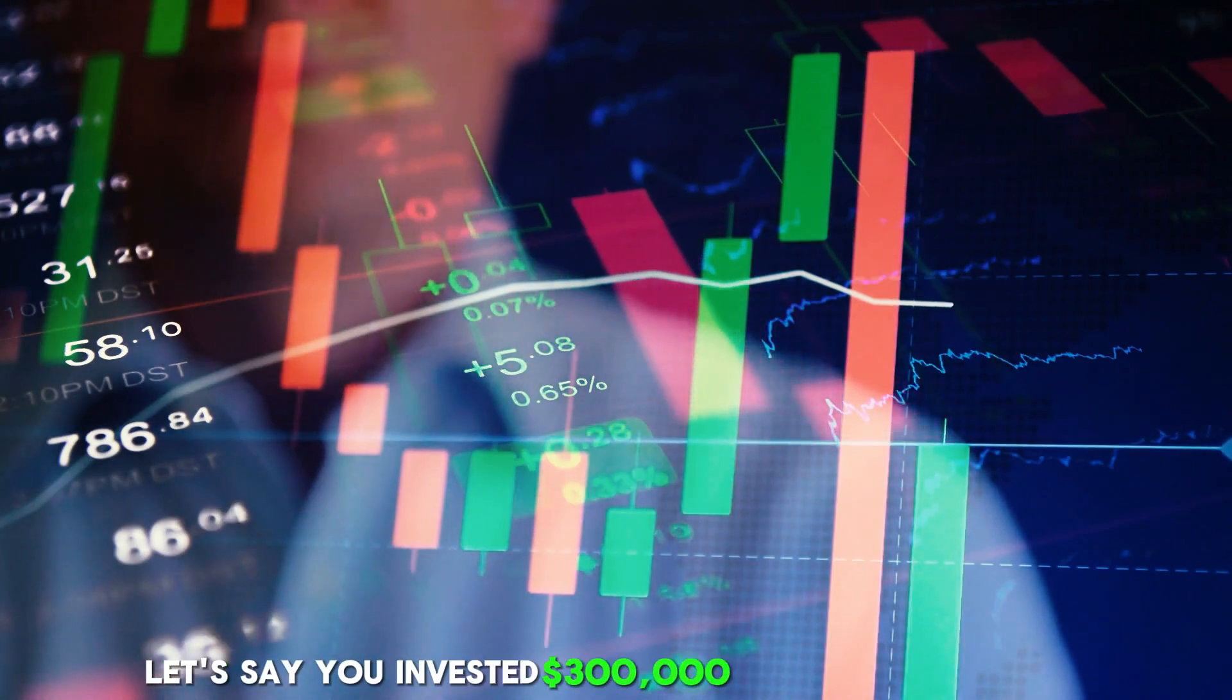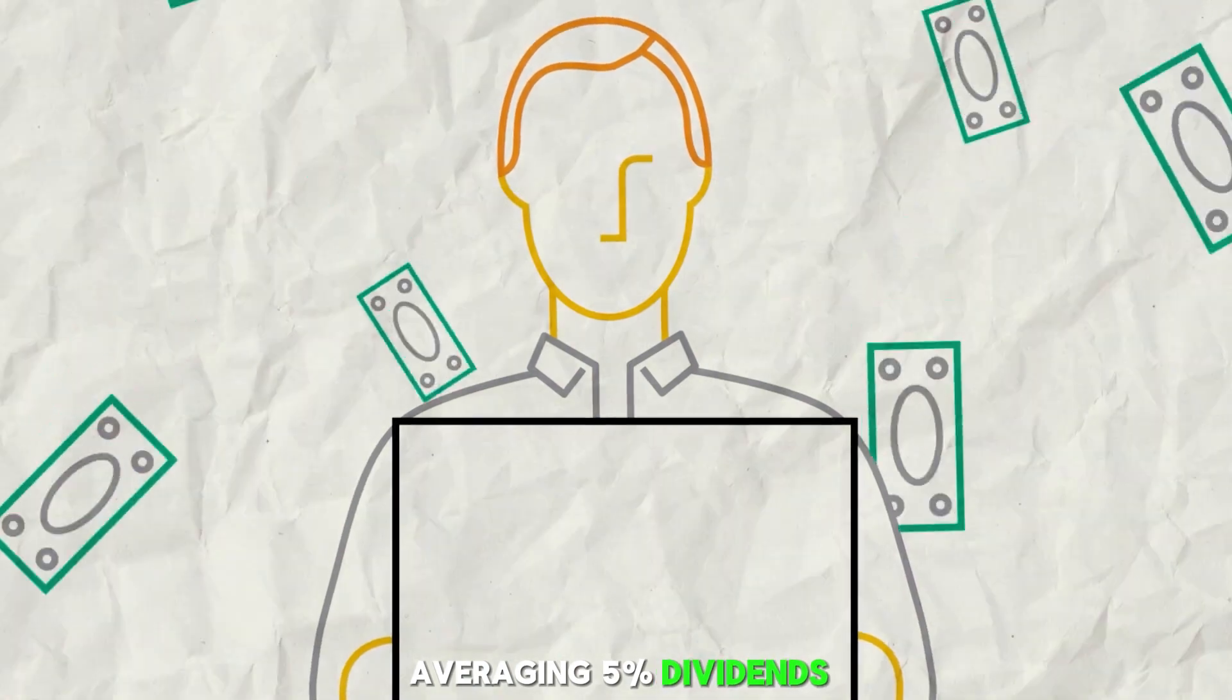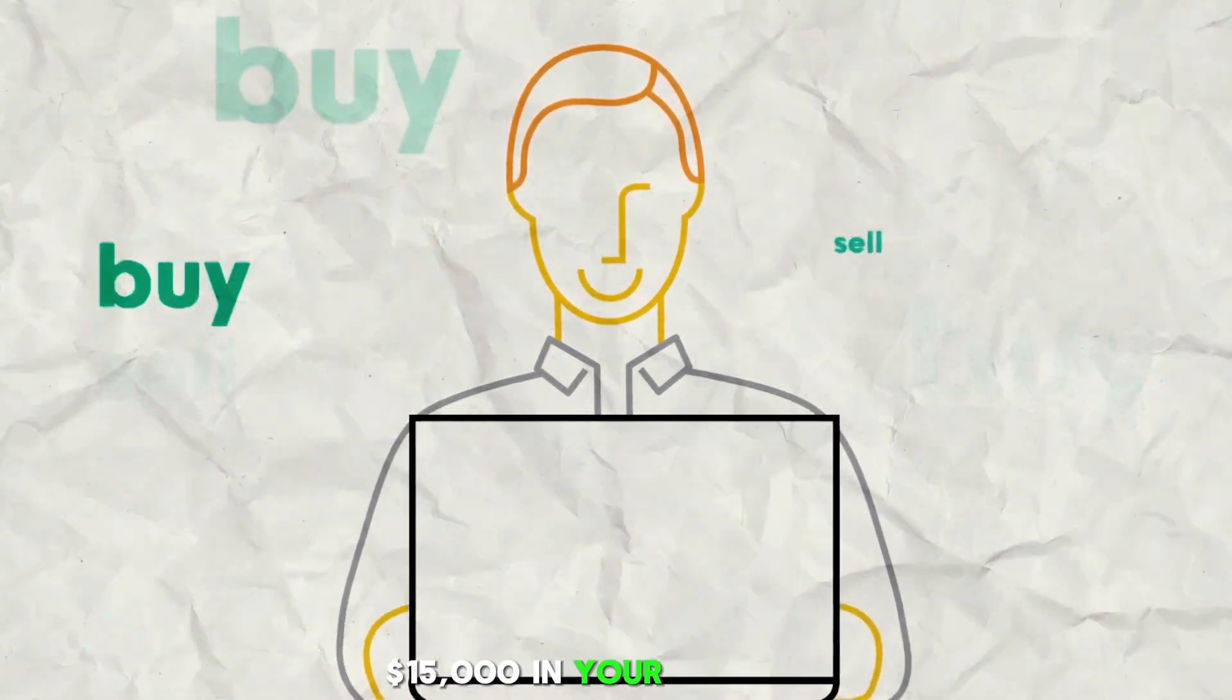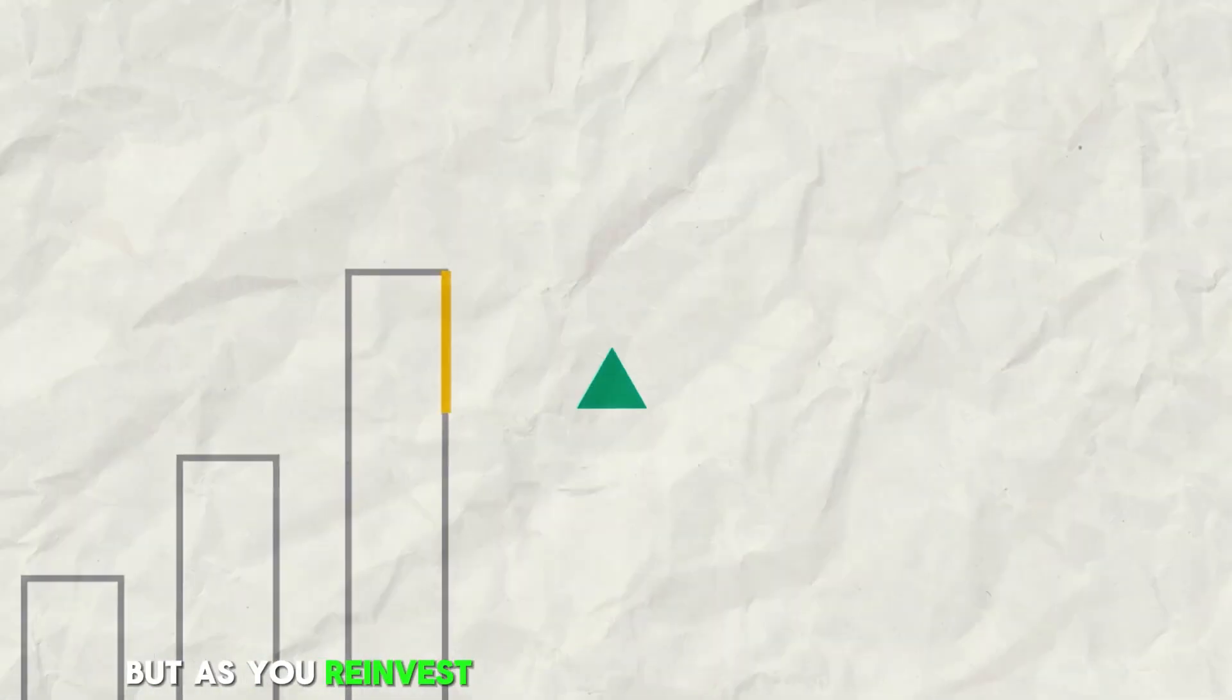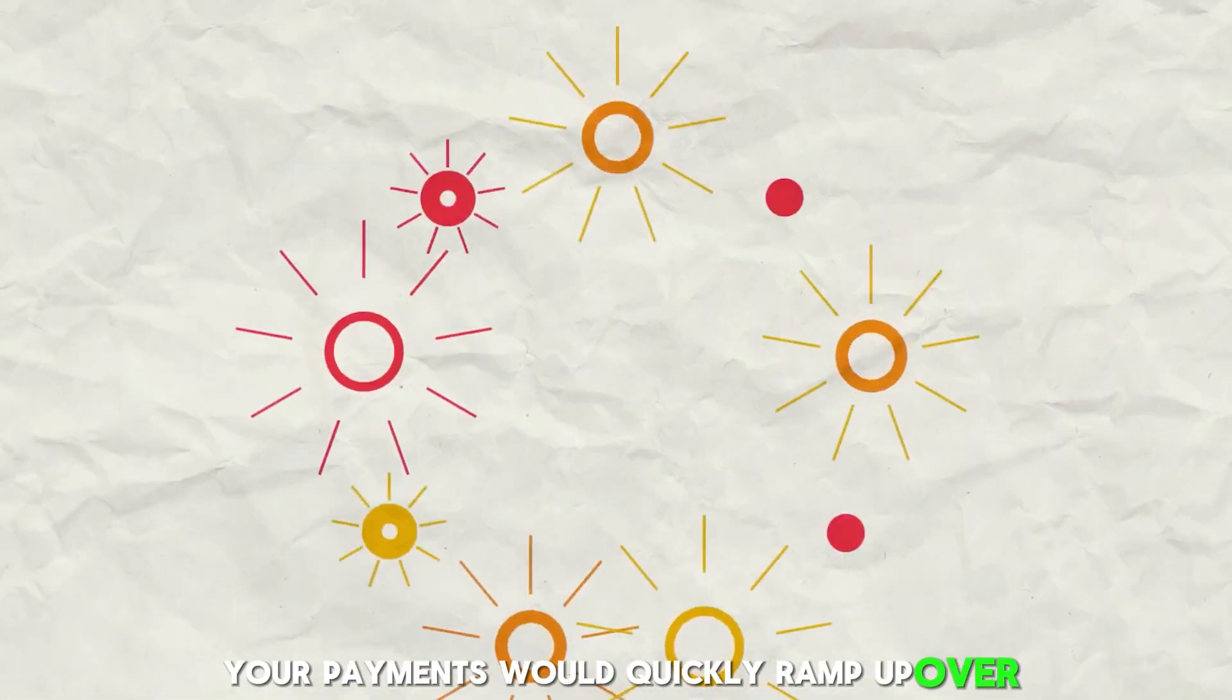For instance, let's say you invested $300,000 into a high-yield ETF averaging 5% dividends. That would kick out around $15,000 in your first year. But as you reinvest those dividends to buy more shares, your payments would quickly ramp up over the years ahead.